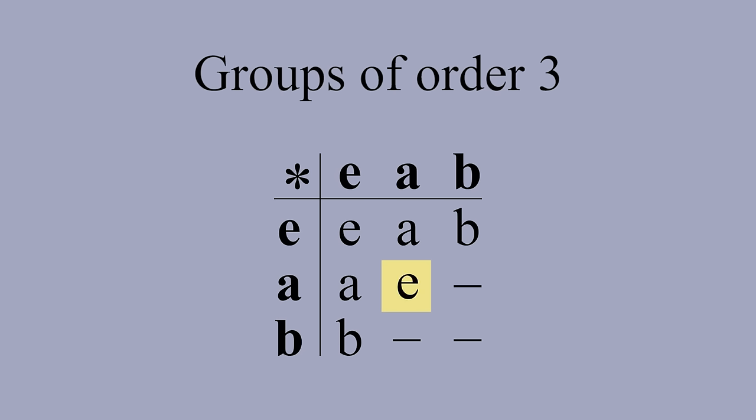Let's guess E and see what happens. If A times A equals E, then the final square in the second row must be B. This is because each row and column has to contain all elements. But the moment we write B, we see a problem. The third column now contains two Bs. This is not allowed. Our guess was wrong, so A times A must be equal to B.